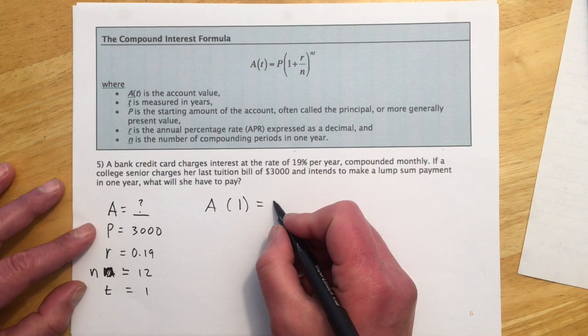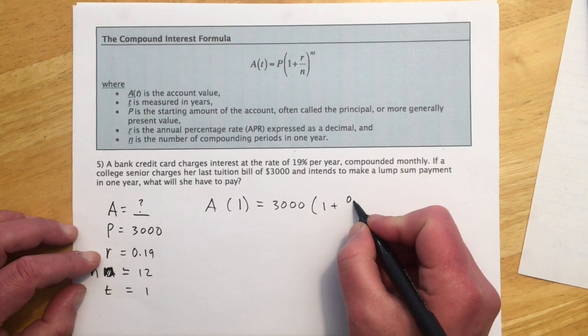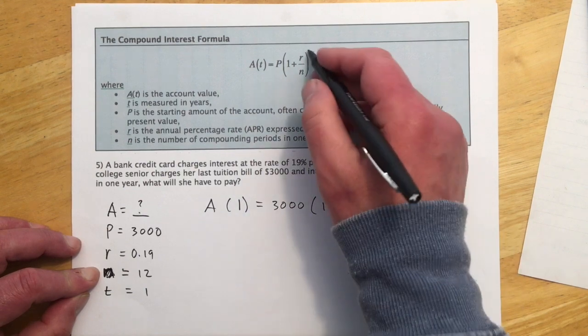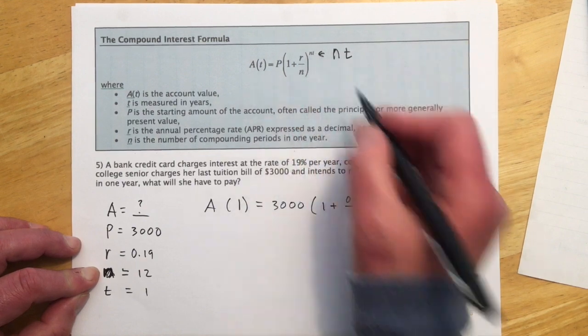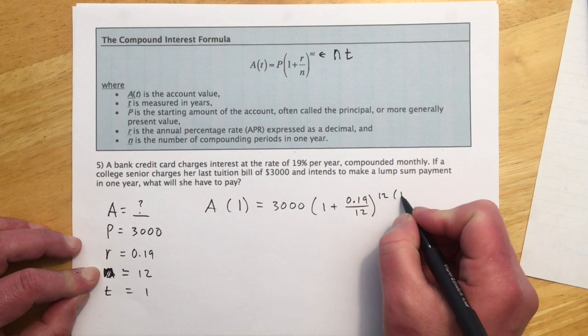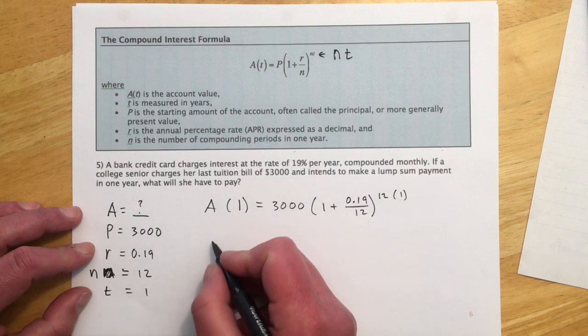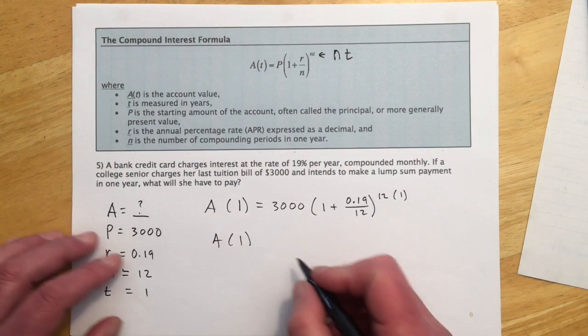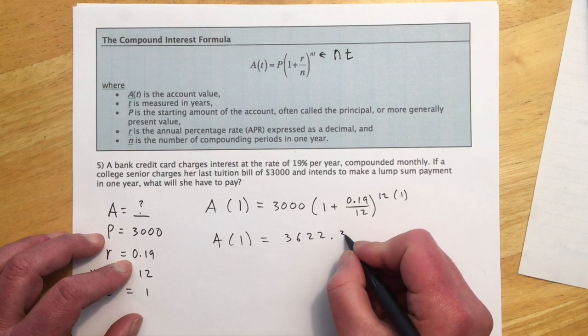So plugging all these into this, we're going to have A(1), because we're evaluating it one year, a principal of $3,000, 1 plus the rate, which is 0.19 over 12. And then up here raised to the NT. N was 12 again, and T is 1. And so then we just plug all that in the calculator, and we get our amount after a year. And if all that makes it in there successfully, it should be $3,622.35 is what I got.